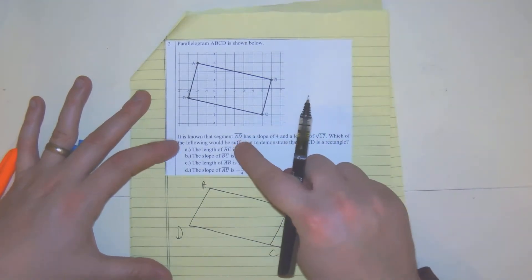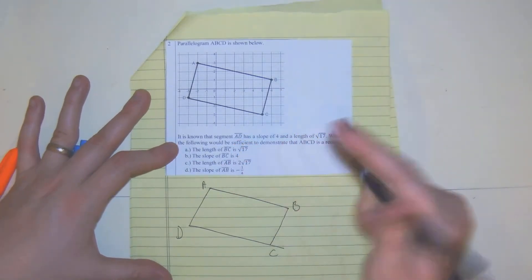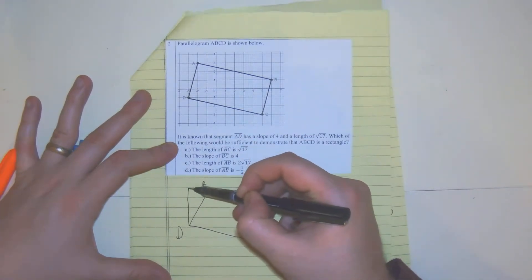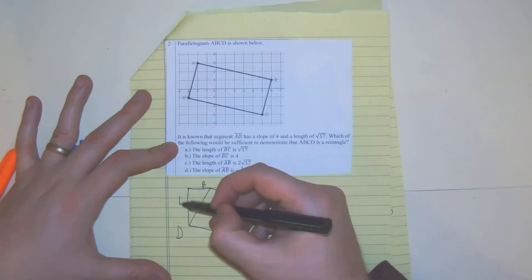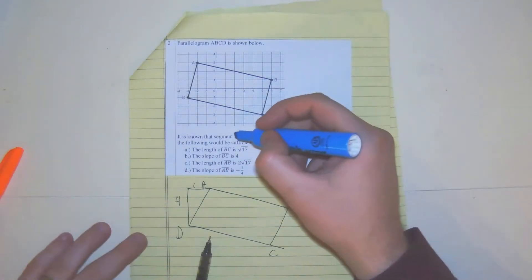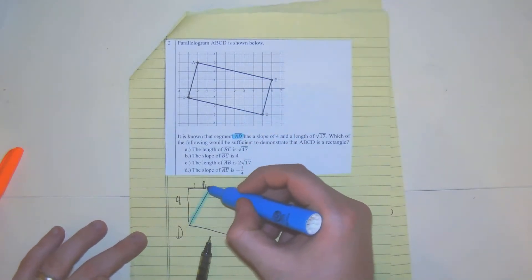So it says first, it is known that segment AD has a slope of four. So that means we go up four over one. So right there, AD has a slope of four.